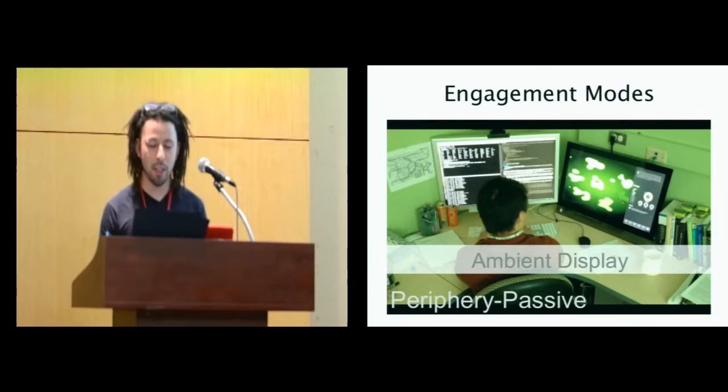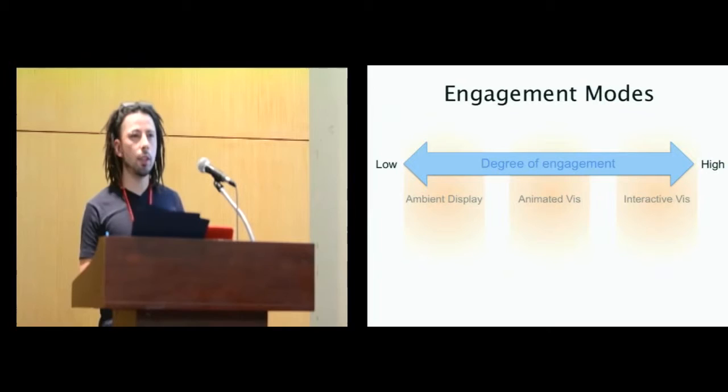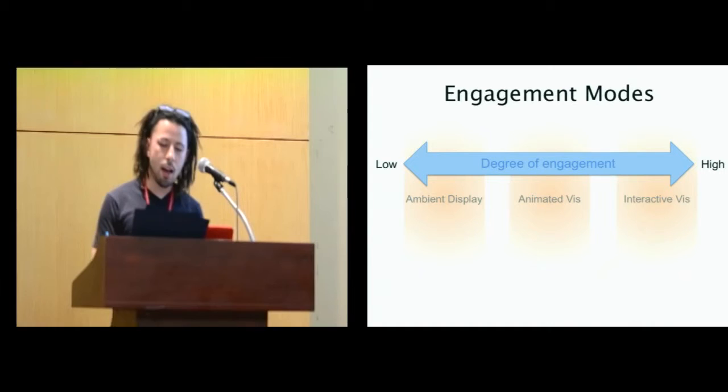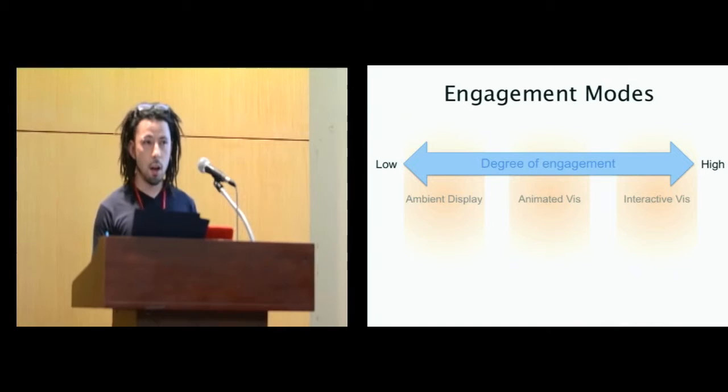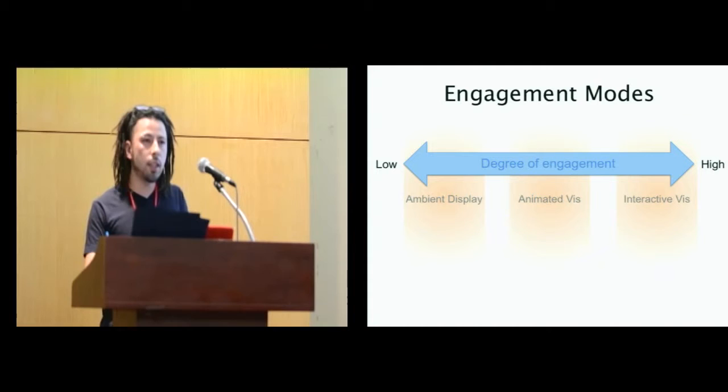So this brings us to this framework which is practice. Basically when we collapse the degree of engagement in one dimension and say low to high, traditionally these different degrees of engagement were recognized but treated in separate verticals. When you have a low degree of engagement, people are going to develop ambient display. If you have mid-range, meaning if you're not really going to actively interact, then we will generate an animated visualization. And if it's super active, super informative, we're going to have a very advanced interactive visualization.